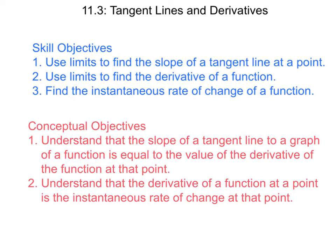Conceptual objectives: number one, understand that the slope of the tangent line to a graph of a function is equal to the value of the derivative of the function at that point. And the second one, understand that the derivative of a function at a point is the instantaneous rate of change at that point. In other words, when we do all of these, we are actually doing the same thing. The derivative is the slope of the curve, the slope of the tangent line, and the instantaneous rate of change.